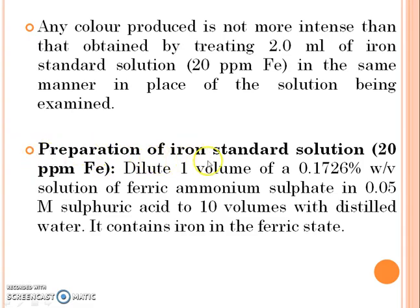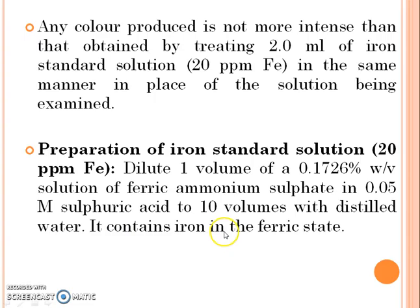Preparation of iron standard solution (20 ppm iron): Dilute one volume of a 0.1726% w/v solution of ferric ammonium sulfate in 0.05 molar sulfuric acid to 10 volumes with distilled water. It contains iron in the ferric state. This was all about the limit test for iron.